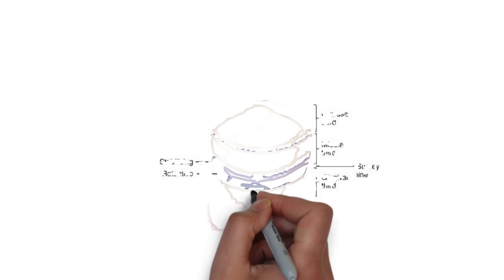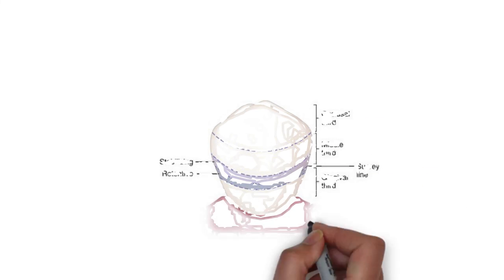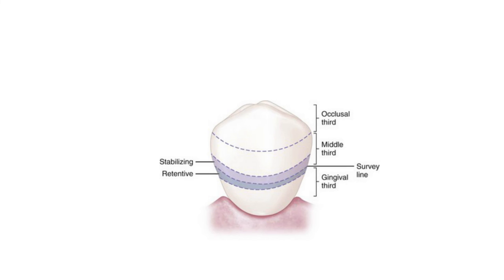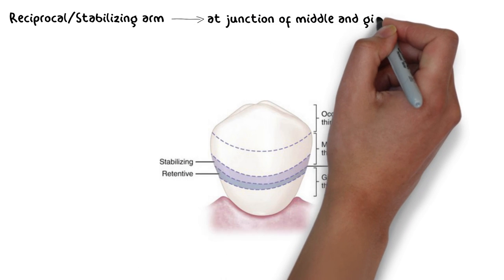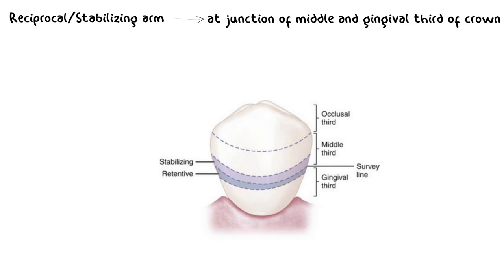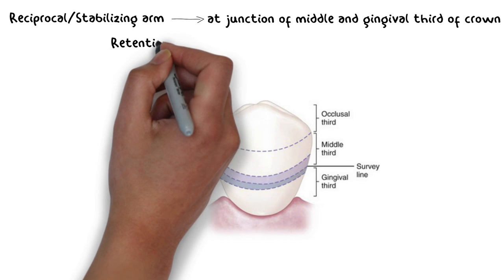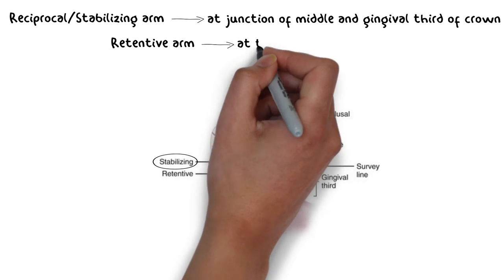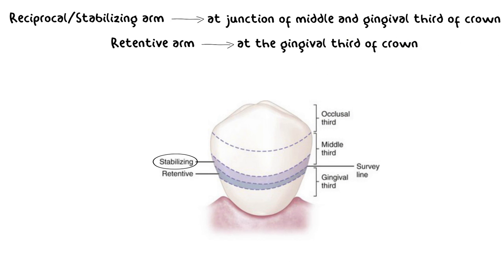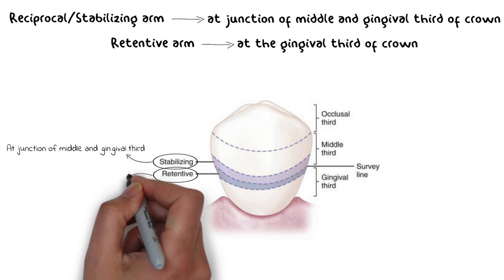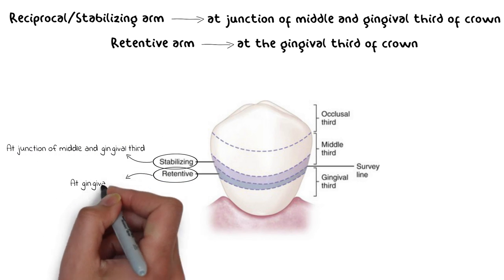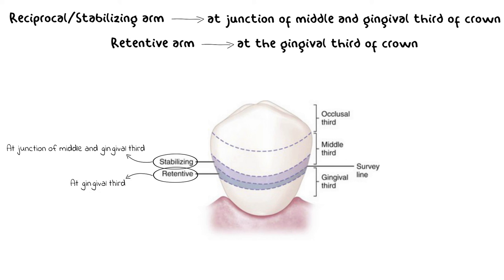Both arms of the clasp should be located on the crown of the abutment. The reciprocal component should be located at the junction of the gingival and middle third of the crown, while the terminal end of the retentive arm is placed in the gingival third of the crown — slightly lower on the crown than the reciprocal component. These locations allow for better resistance to horizontal and torquing forces.